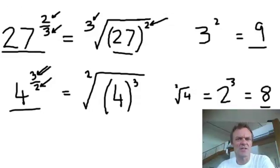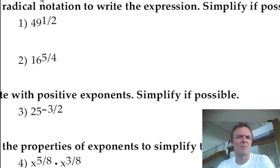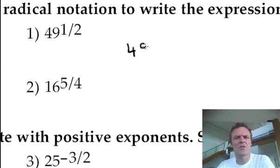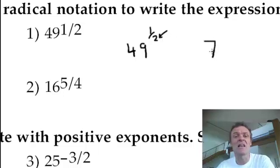So just remember: where does the 2 go, where does the 3 go? Let's have a quick look at some examples that might be on the quiz. How about 49 to the power 1 half? For this one, remember the denominator is the root — all I'm doing is square rooting. What's the square root of 49? It's 7. Because if I raise it to the power 1, it's still 7.